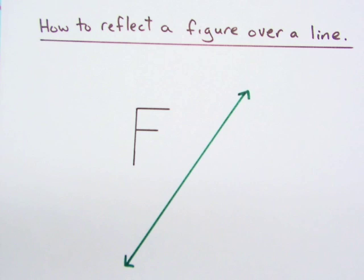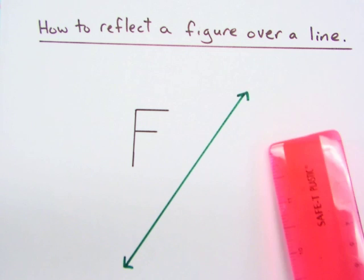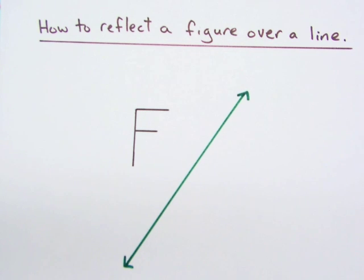All right, so in how to reflect a figure over a line, here we have the letter F and a diagonal line of reflection right here.